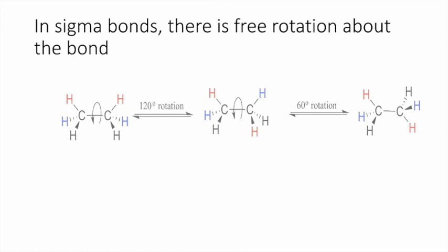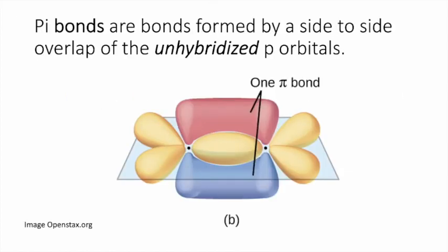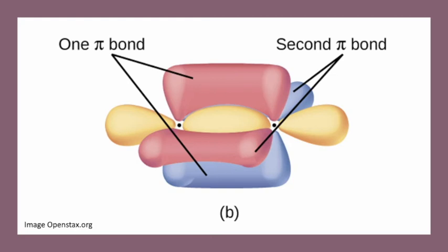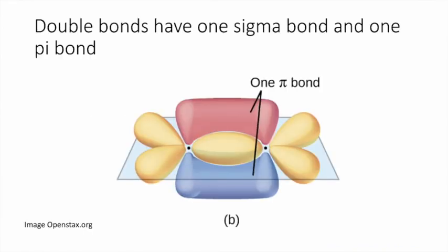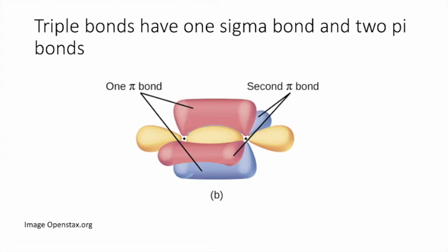Pi bonds are bonds that are formed by side-to-side overlap of unhybridized p orbitals. In this picture, we have one pi bond that's formed by two unhybridized p orbitals. In this picture, we have two pi bonds, and they're formed by different overlapping p orbitals. Now, you need to know that every bond has a sigma bond in it. Single bonds, double bonds, triple bonds. They each have one sigma bond in them. Now, double bonds will have a sigma bond and a pi bond. Triple bonds have a sigma bond and two pi bonds.